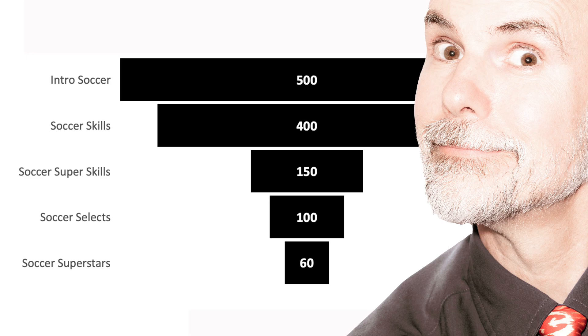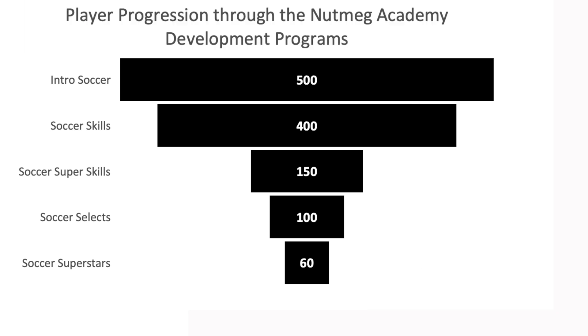To gain a better understanding of how players progress through the development programs, you created a funnel chart. At the top of the chart is the title, and the source of the data is on the bottom right.